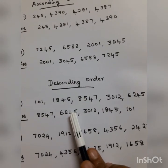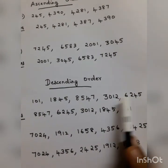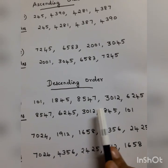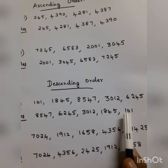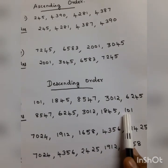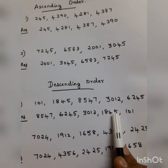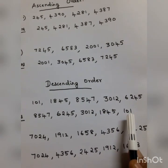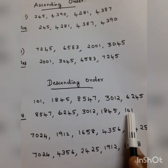The second largest number is 6,245. Then 3,012. Then 1,845 and 101. Note that 101 has only 3 digits, so it is the last number in descending order.